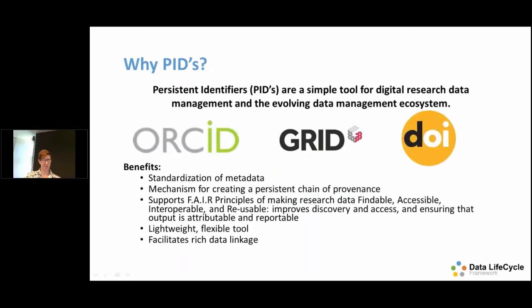The need for these persistent identifiers was because we needed a really simple tool — something that connected things up without being heavy software or being very taxing for researchers or institutions. It had to be responsive and semi-automated. The benefits are: standardised metadata, a mechanism for creating a persistent chain of provenance, supports FAIR principles, a lightweight flexible tool, and facilitates rich data linkage.